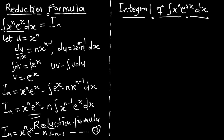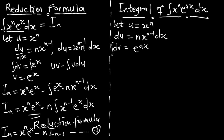Looking at this — the previous formula was for e^x. If it is e^(ax), how do we get the reduction formula? Here too, we can let our u be equal to x^n. Our du will still be equal to n * x^(n-1) dx. From this part, my dv is going to be e^(ax). Therefore, integrating both sides will give me v equal to (1/a) * e^(ax).